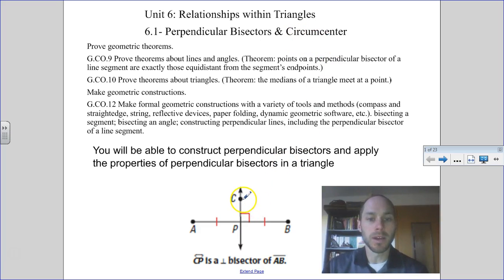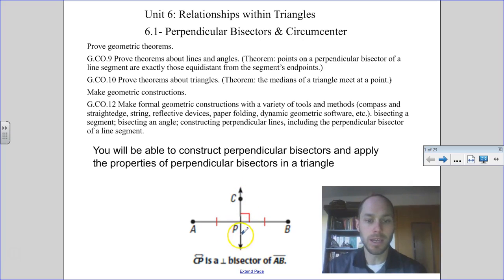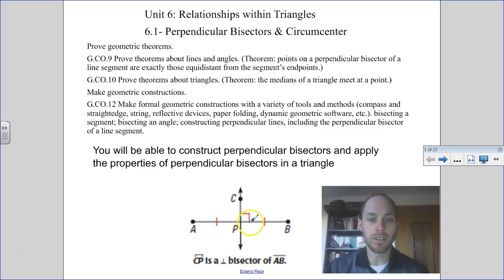As we talked about a perpendicular bisector, we know what a perpendicular line is. We also know the bisector is where it splits the line into two equal parts. So line CP here is a perpendicular bisector of segment AB, because it forms a perpendicular line, and AP is congruent to PB.